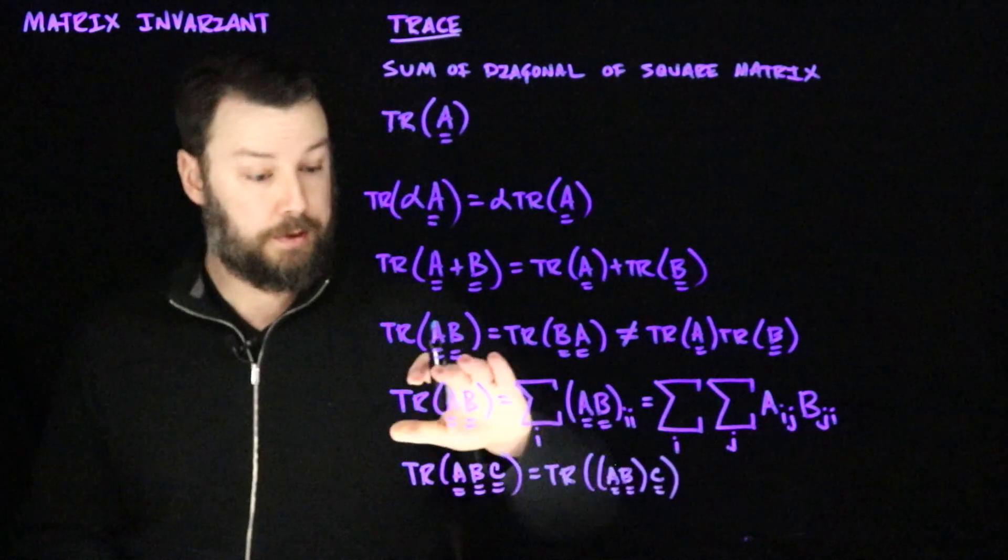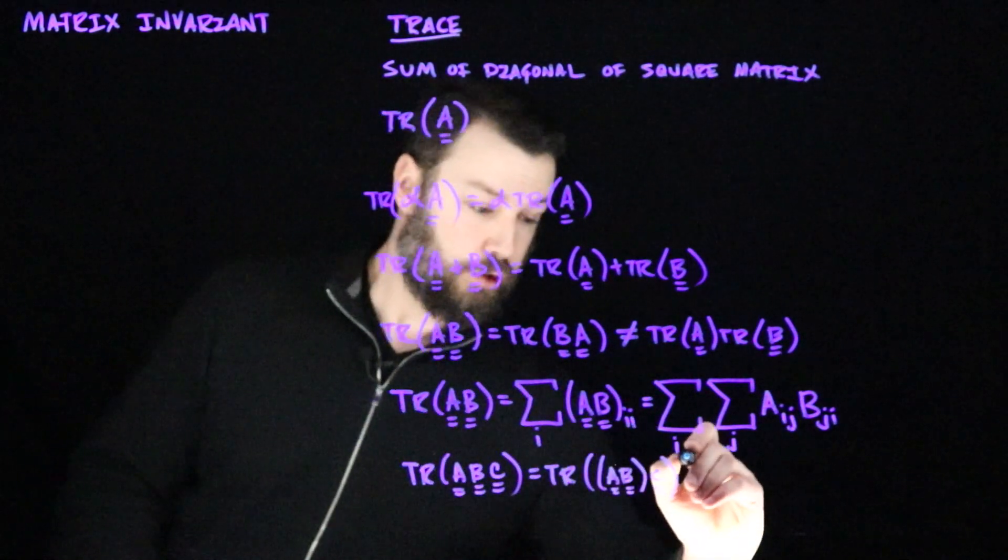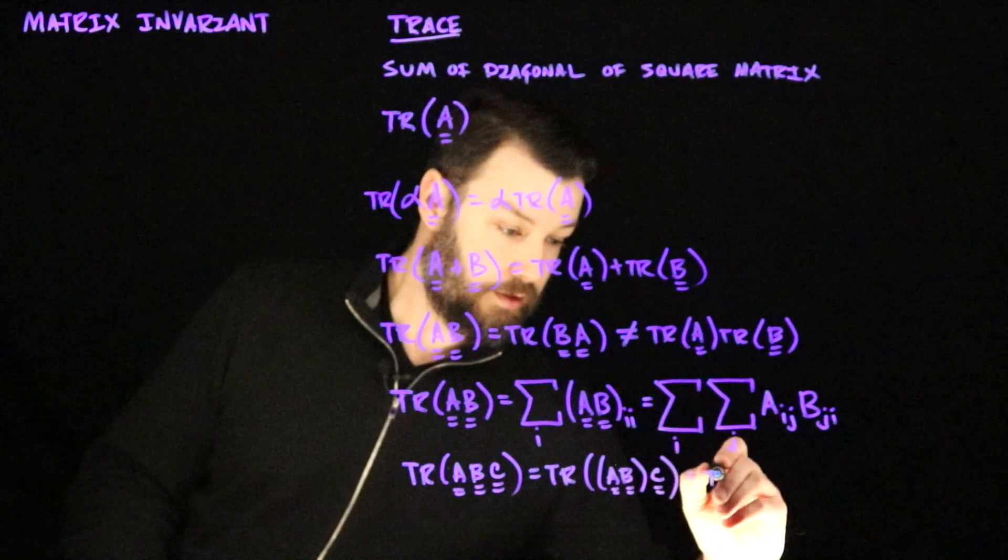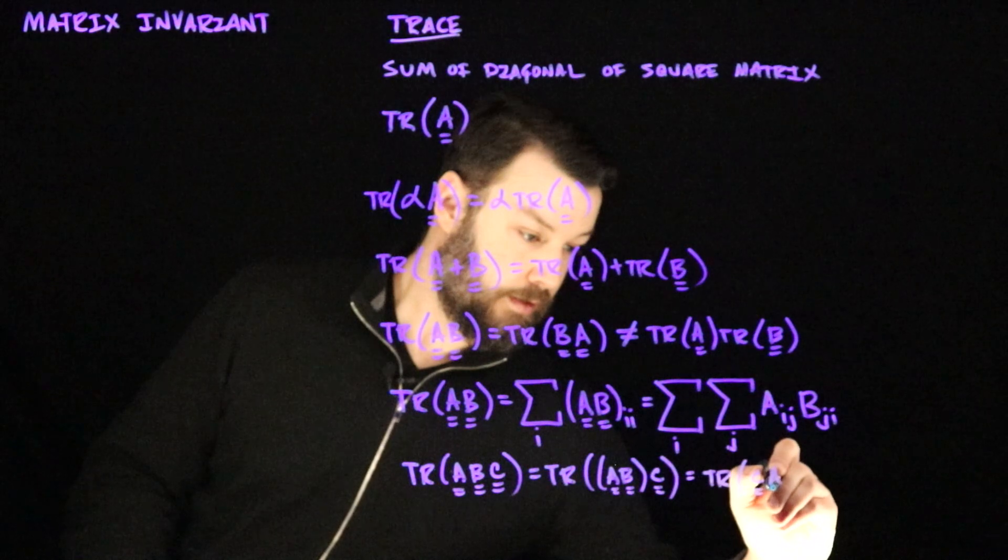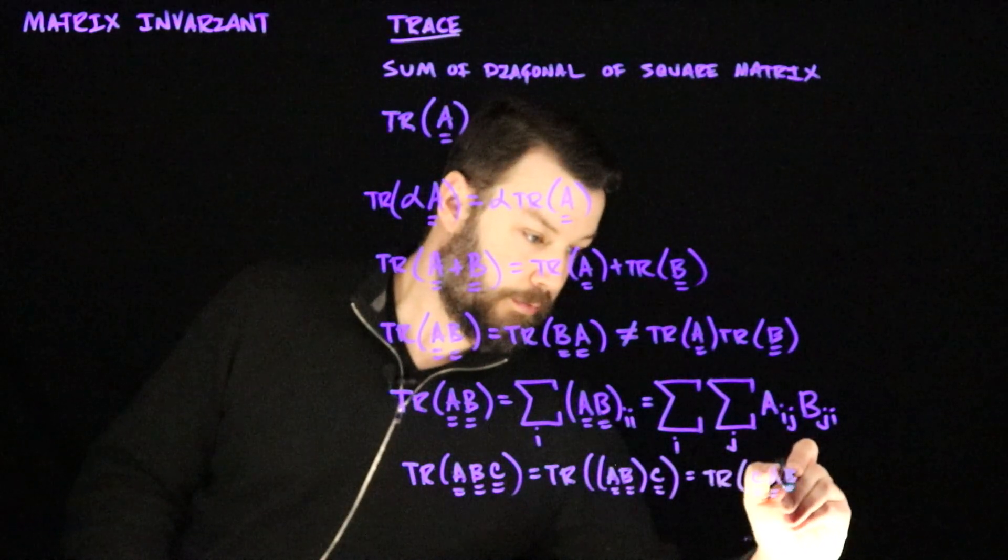Then because of this commutativity, I could have written that as trace of C multiplied by A multiplied by B.